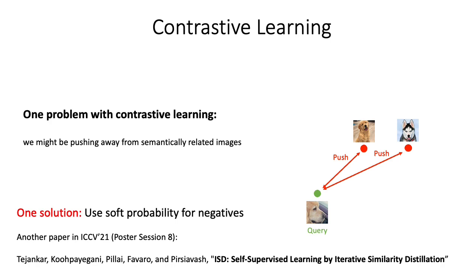One solution to this problem is to use soft probabilities for negatives, which is proposed in the paper ISD — Self-Supervised Learning by Iterative Similarity Distillation. We will be presenting this paper in poster session 8 at this conference, and we invite you to attend to learn more.